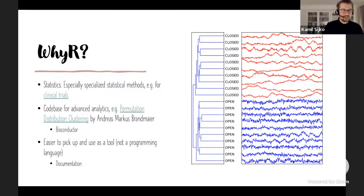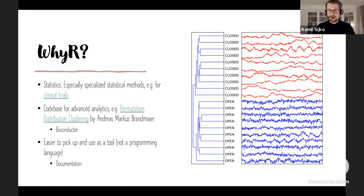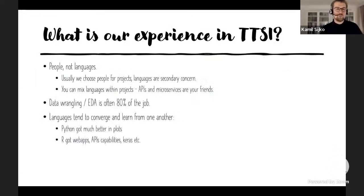Third, R is easier to pick up and use as a tool rather than a programming language. If you want to give someone a nice analytical tool, it's quite challenging with Python — you need to download the interpreter, think about virtual environments, Conda, and so on. With R, you just download R itself, possibly RStudio, and you're ready to go. Using the excellent R documentation, you're capable of delivering nice results. The learning curve is steeper for Python in this regard.